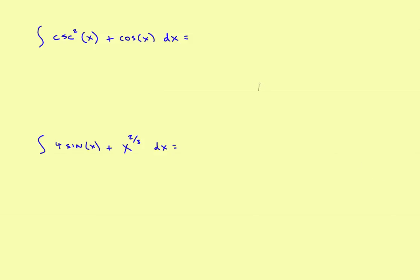Let's take a look at the final examples. I've got the integral of cosecant squared plus cosine. You can split this into two separate antiderivatives: the antiderivative of cosecant squared is negative cotangent of x, plus the antiderivative of cosine, which is sine of x, plus c. If you've got two terms added together, just find each antiderivative separately.